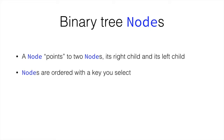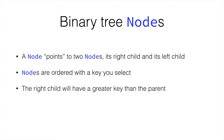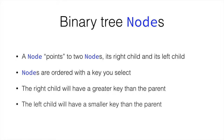Nodes are ordered with a key you can pick when you're programming the node. The right child is going to have a greater key than the parent, and the left child is going to have a smaller key than the parent.